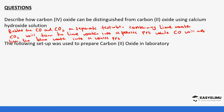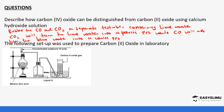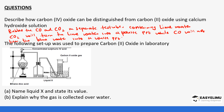Question: The following setup was used to prepare carbon monoxide in the lab. We have concentrated sulfuric acid, ethanedioic acid, liquid X, and carbon monoxide collected. Liquid X is ethan-1,2-dioic acid, which decomposes to produce both carbon dioxide and carbon monoxide. Liquid X should be sodium hydroxide or potassium hydroxide — to absorb the carbon dioxide produced. Question: Explain why the gas is collected over water. Answer: It is slightly soluble in water.